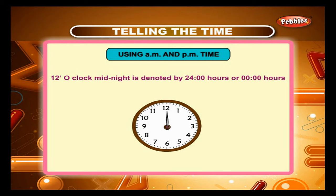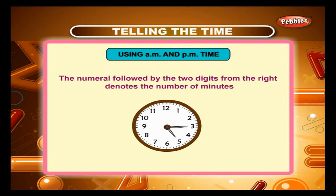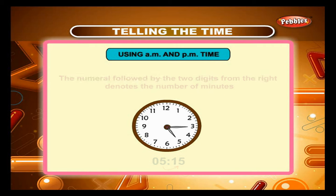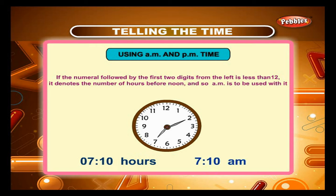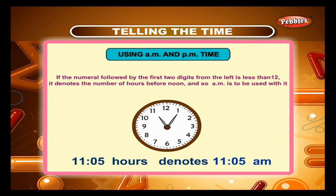Rule 1: 12 o'clock midnight is denoted by 2400 hours or 0000 hours. Rule 2: 12 o'clock noon is denoted by 1200 hours. Rule 3: The digits on the right denote the number of minutes. Rule 4: If the first two digits from the left are less than 12, they denote the number of hours before noon, so AM is used. For example, 0710 hours denotes 7:10 AM, and 1105 hours denotes 11:05 AM.